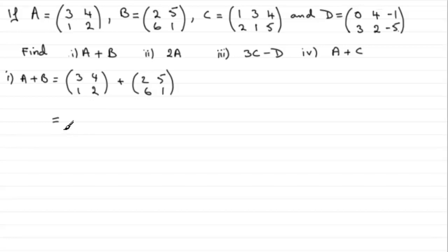So they've got the same dimensions and the result is a matrix also with the same dimensions of 2x2. What happens is we just add element with element. So we've got 3 added to the 2 gives us 5, and then 4 + 5 gives us 9, 1 + 6 is 7, and 2 + 1 is 3, our 2x2 matrix.